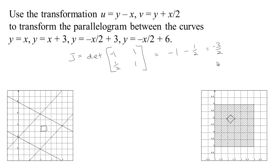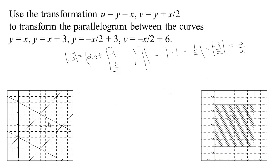Now, if we just want to know the stretching factor, we don't care about the negative sign — we just care about the area of the result. So for our actual stretching factor, we always take the absolute value of the Jacobian, because we just want to know how much our region is stretched. That makes 3 halves for our Jacobian. So any region over here will be stretched to a region that is 50% larger — it's going to be stretched by a factor of 3 halves.